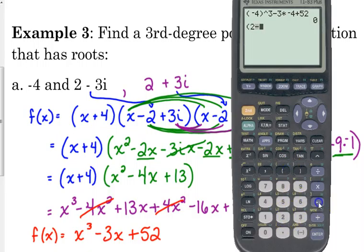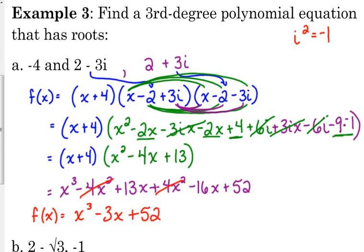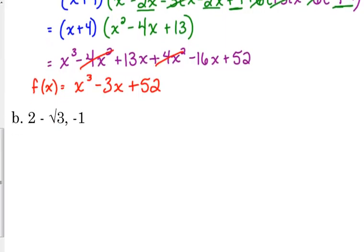Negative 4 gives us zero, so that's a good sign. I do want to check one of the imaginary ones just in case. Now, there is an i button on your calculator. It is second, and your decimal button will allow you to put that i in there. So, just make sure you put 2 minus 3i in parentheses, cubed, minus 3 times 2 minus 3i in parentheses, plus 52, and it gives us zero. Now, if that one works, it's almost guaranteed that the other one's going to work. You could just go back in and change that to 2 plus 3i to confirm that all three of those roots give you that polynomial. Kind of a lengthy process, but y'all can do this.